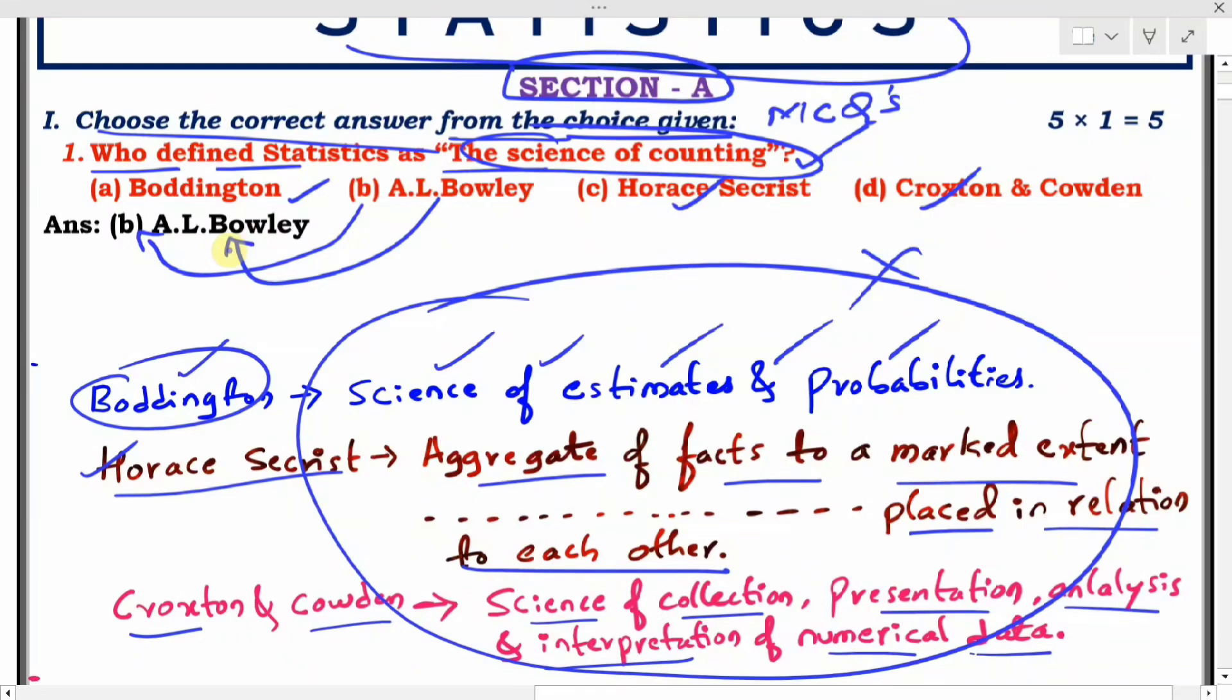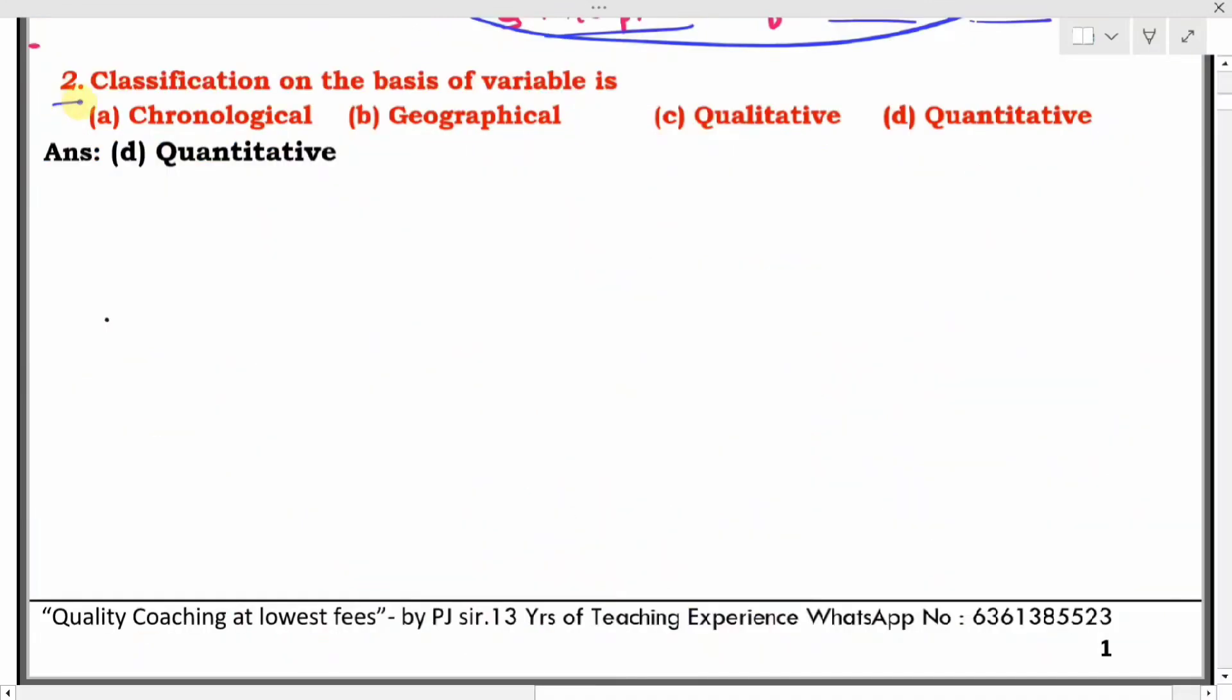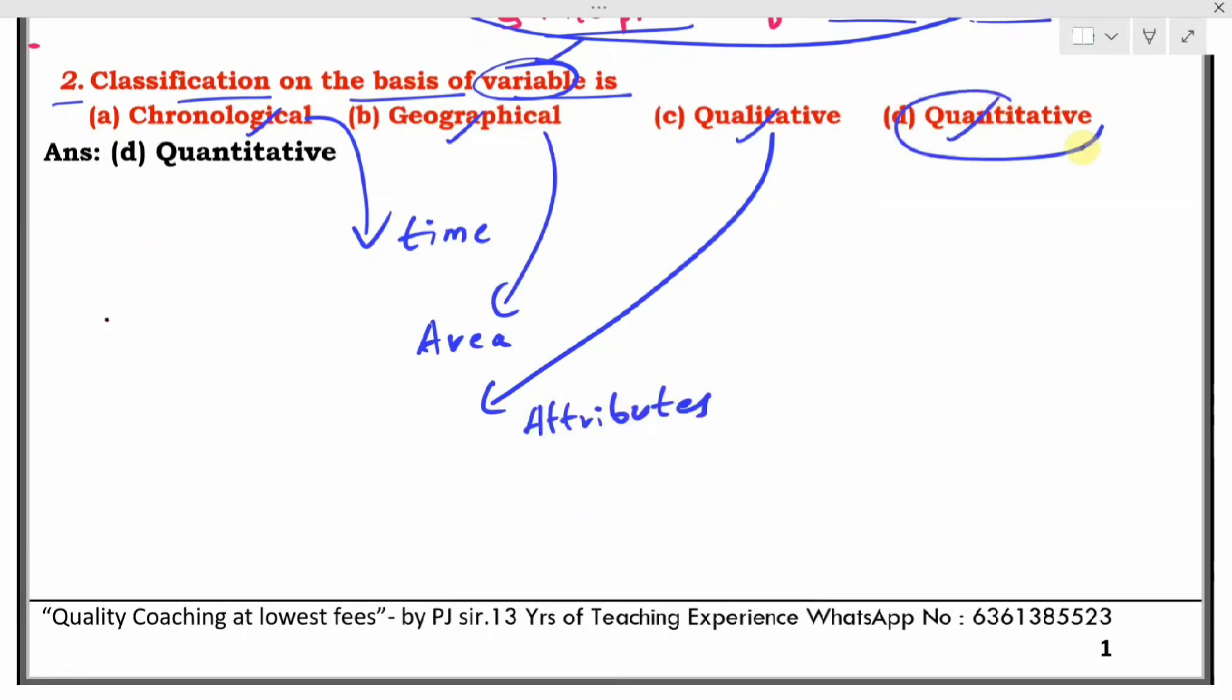Second question: Classification on the basis of variable is? Options are chronological, geographical, qualitative, and quantitative. Chronological is based on time, geographical is based on area, qualitative is based on attributes, and quantitative is based on variable. So the correct answer is option D, quantitative.